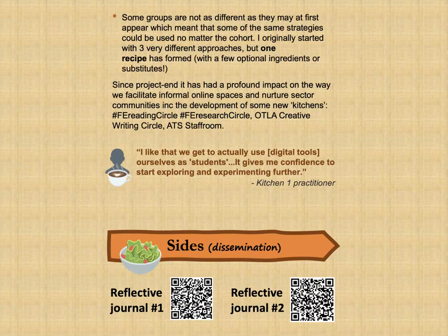Lastly, I found that I went into this thinking there was going to be one recipe for each of the different kitchens, but there was actually one recipe in the end that worked for all the different kitchens, with a few little ingredient substitutes. And since the project, it's had a profound impact on the way we facilitate all of our informal online spaces and nurture sector communities. You can see a few of the new kitchens there — Reading Circle and Every Research Circle — which are open to everybody, so if you want to get in on that, have a look at those hashtags.